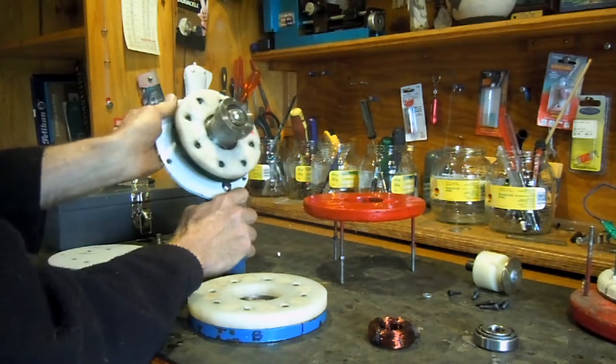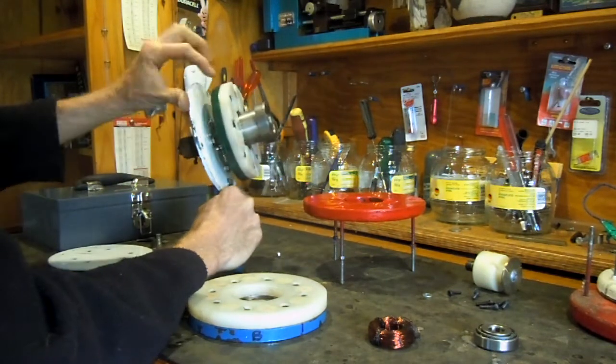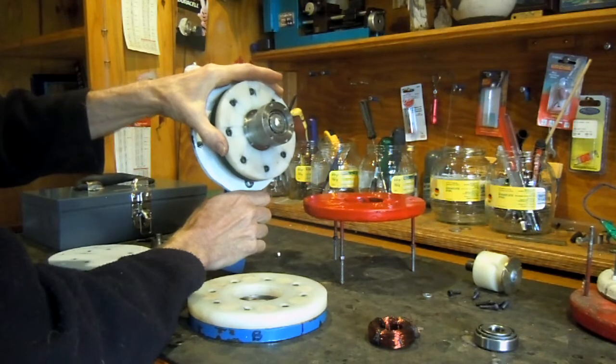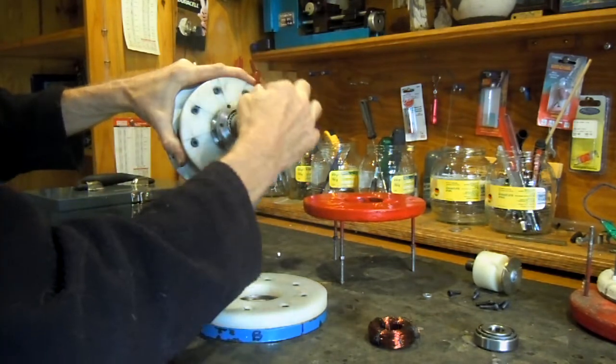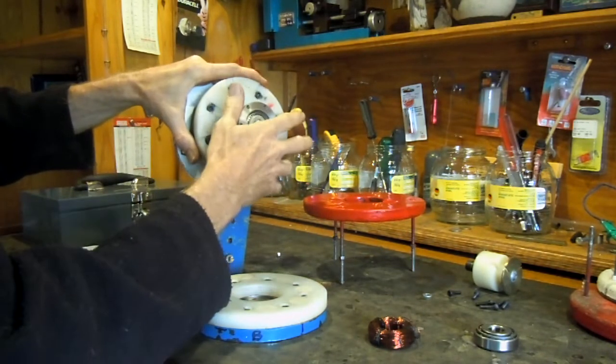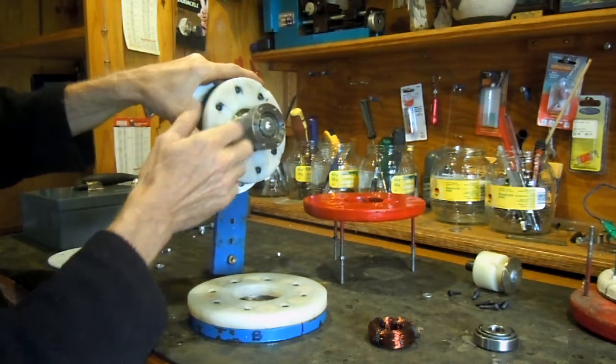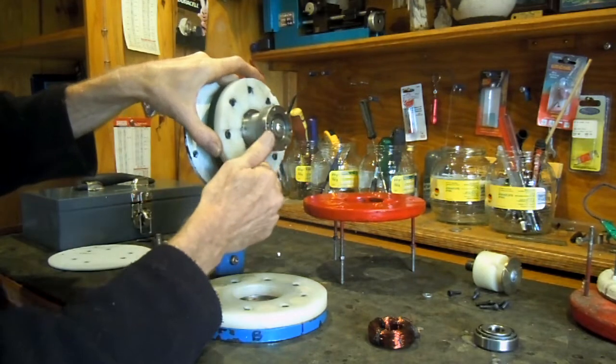The rear disc is similar to the front one. The green part is made of steel, the white part again is nylon, and again we've got eight magnets with alternating polarity. Additionally, the rear disc has some slots cut into it.